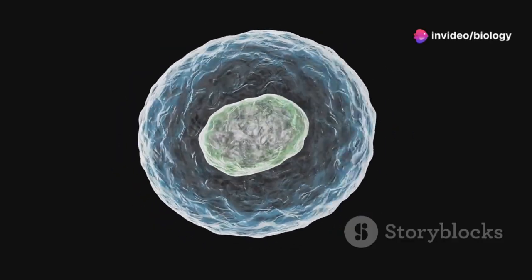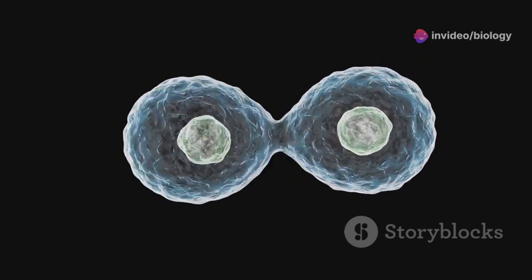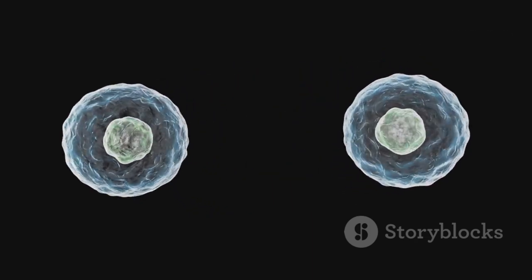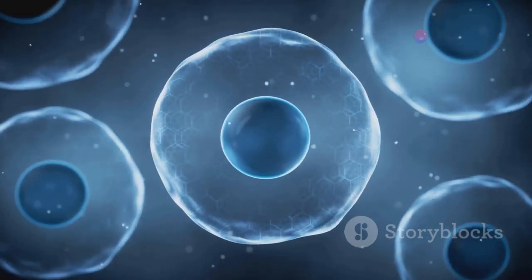Just like any good detective needs to know their crime scene, you need to know the difference between a prokaryotic cell like bacteria and a eukaryotic cell like one of your very own. Prokaryotic cells are simpler and lack a nucleus, while eukaryotic cells are more complex and contain a nucleus and other organelles.